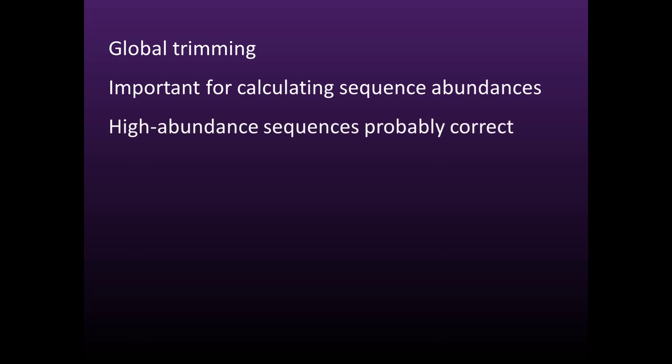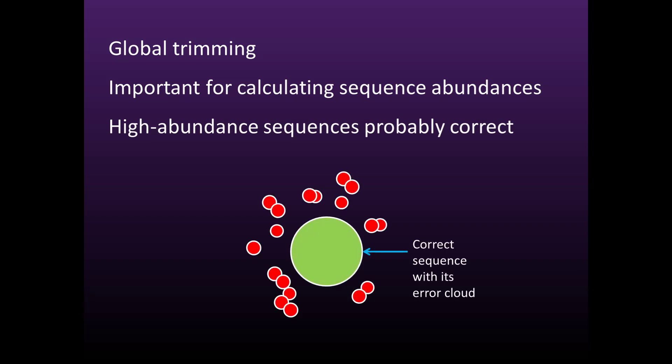Global trimming is important for calculating informative sequence abundances. Abundance is critically important for distinguishing correct sequences from their error clouds. The goal of global trimming is to ensure that there are no end gaps when reads of the same biological template sequence are aligned to each other.